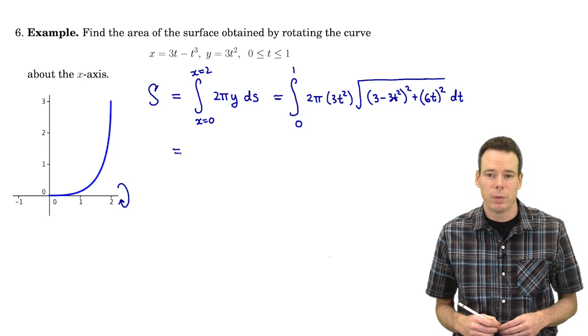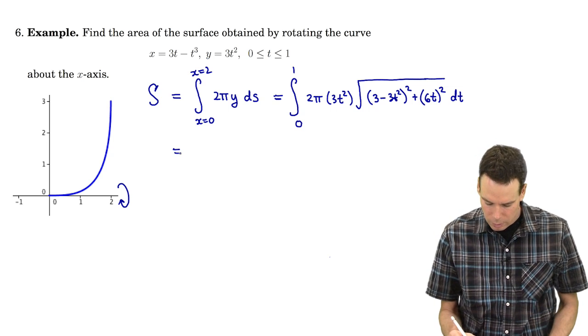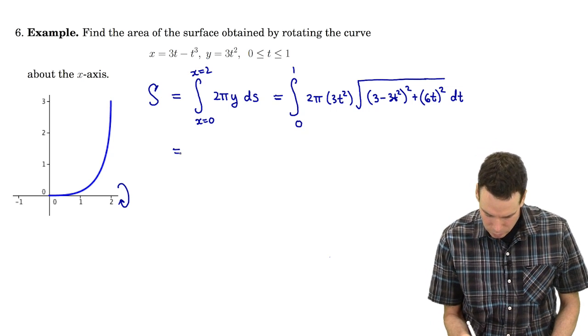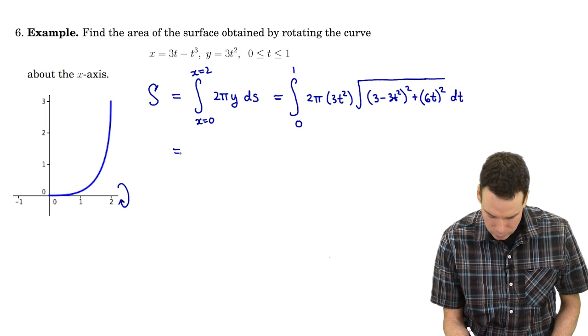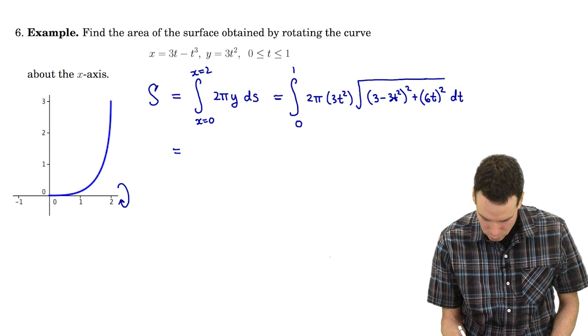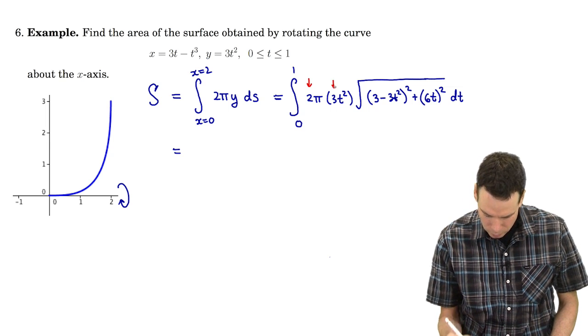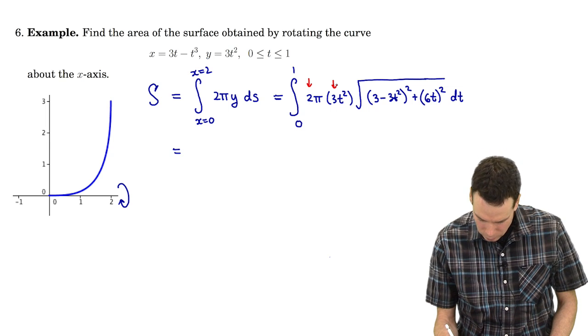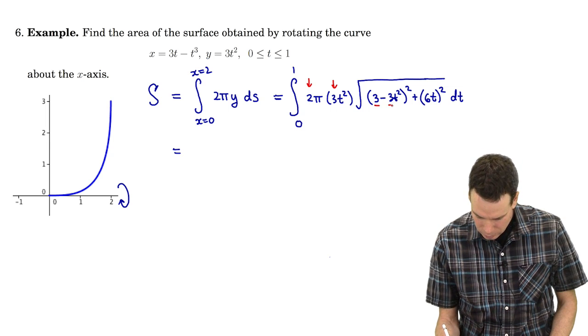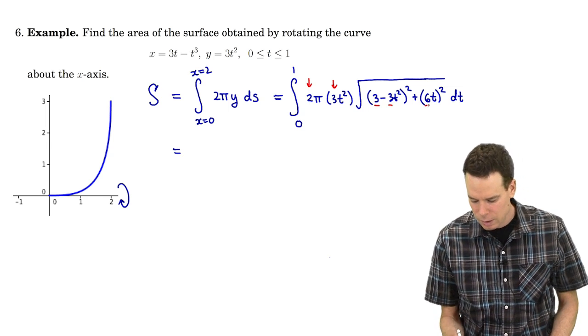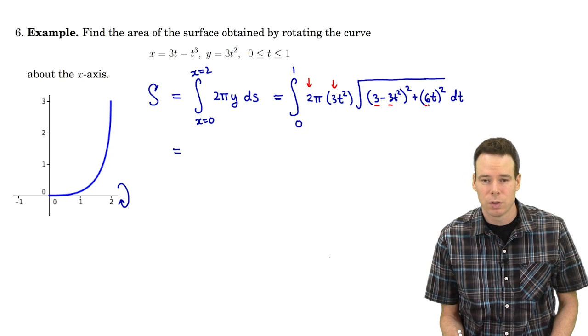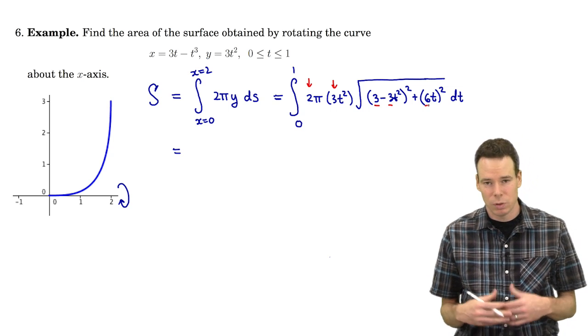So there's the integral that we have to work out. Do a little bit of simplification here. I notice that I've got a factor of 2, a 3, and I've got this 3, there's a factor of 3 in that 6. I've got a factor of 3 in the first term which when it comes out of the square it comes out as a 9.